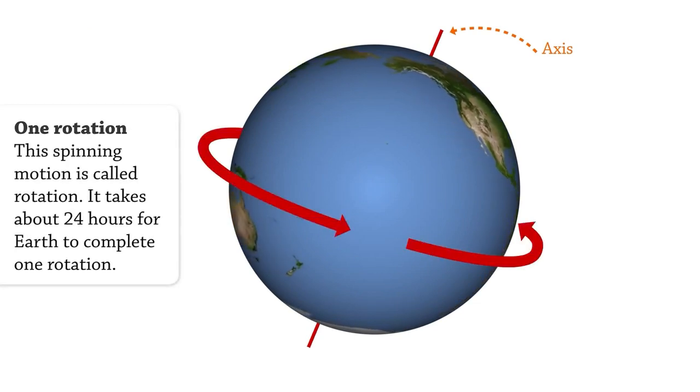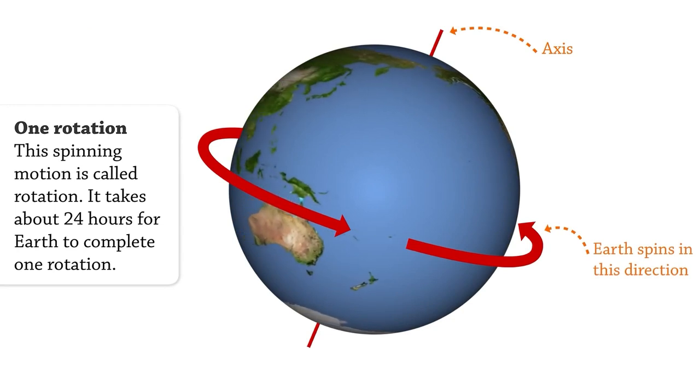This spinning motion is called rotation. It takes about 24 hours for Earth to complete one rotation.